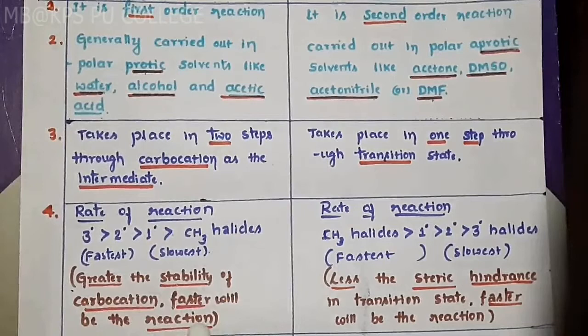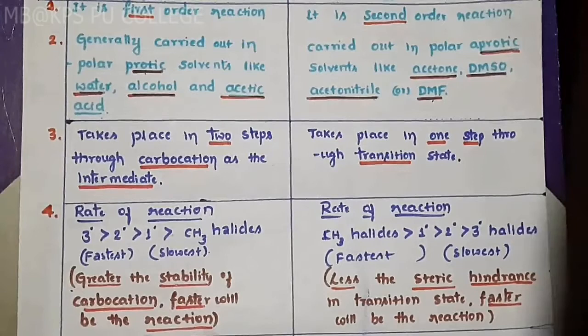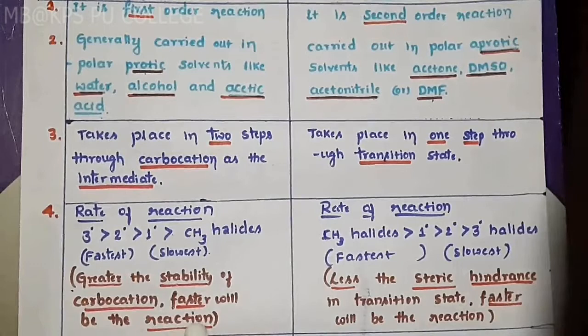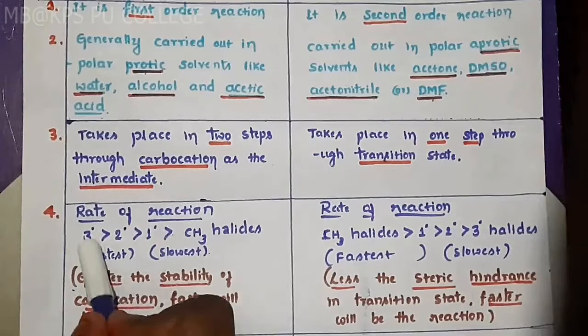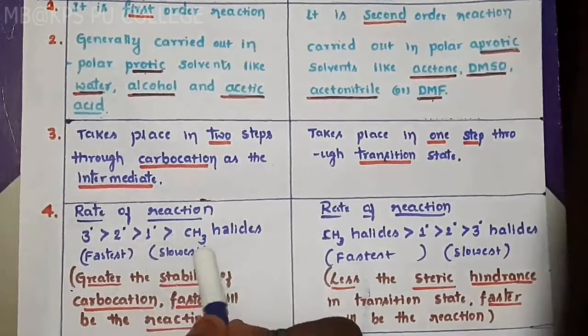In SN1 mechanism, molecules with more bulky groups show faster reactivity. Greater the stability of carbocation, faster will be the reaction. Tertiary carbocation is more stable than secondary, secondary is more stable than primary, and primary is more stable than methyl.